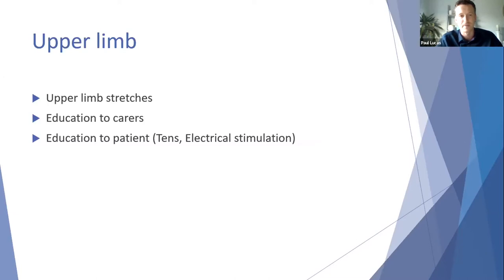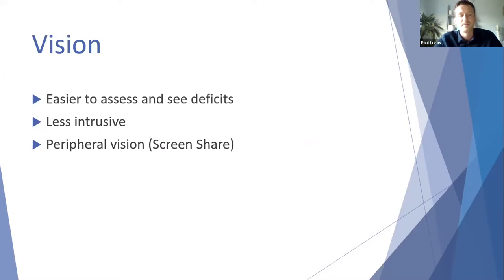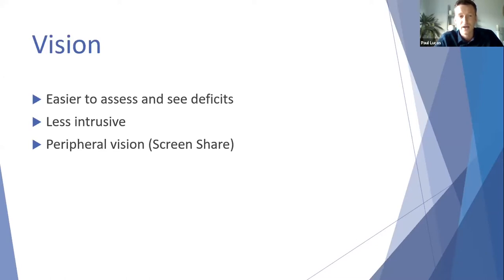You can use tele-rehab to provide information on setting up things like electrical stimulation and TENS for weak muscles and sensory issues post-stroke. Regarding vision, we've found it can be quite easy to assess and see some deficits with eye movements, particularly following a stroke. It feels less intrusive than having to get close to a patient's face, and you can observe them moving their eyes left to right, up and down diagonally, to assess gaze stability.